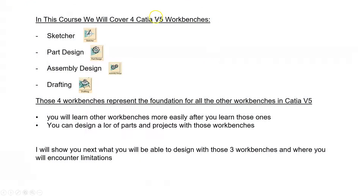In this course, we will cover four CATIA workbenches. We will start with the sketcher where we design 2D sketches that will be projected in a third dimension, and we will do that in part design. We use part design and sketcher to design parts. Then we use assembly design to assemble the parts to create bigger assemblies and sub-assemblies.